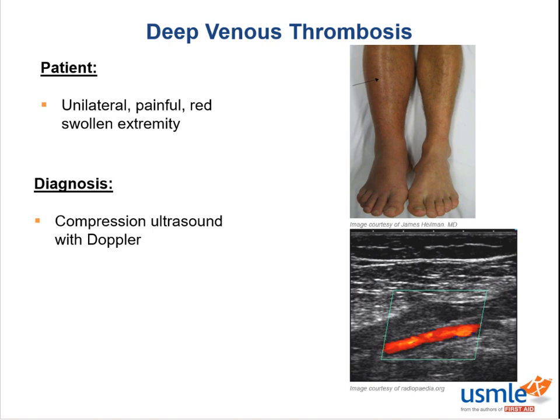To make the diagnosis, use a compression ultrasound with Doppler of the extremity in question. Compression means that you're literally pressing the ultrasound probe down on the leg. Veins are thin-walled and are easily compressible, but when there's a clot, the vein becomes non-compressible, and that's one of the hallmark diagnostic findings of DVT. Doppler means that in addition to conventional ultrasound, you're also assessing blood flow. You see those red, flamey colors? Yeah, that's Doppler.